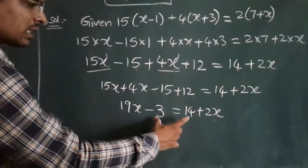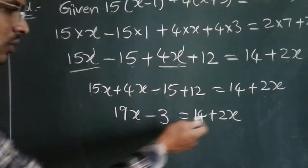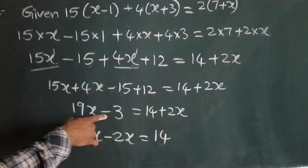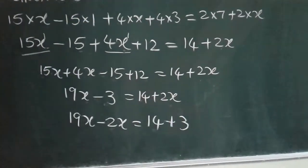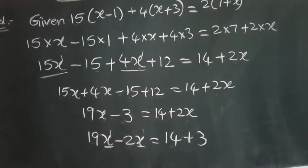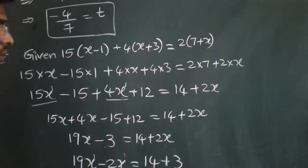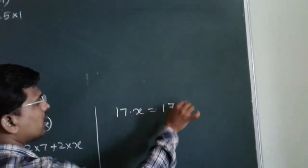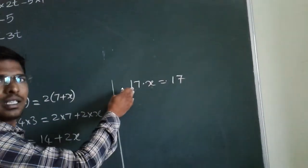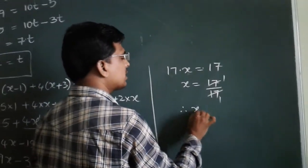Variable terms are on both sides and constant terms are on both sides. Sending 2x to the left hand side gives minus 2x, and sending minus 3 to the right hand side gives plus 3. So 19x minus 2x equals 14 plus 3, giving 17x equals 17. Sending 17 to the right hand side as a divisor: x equals 17 divided by 17, therefore x equals 1.